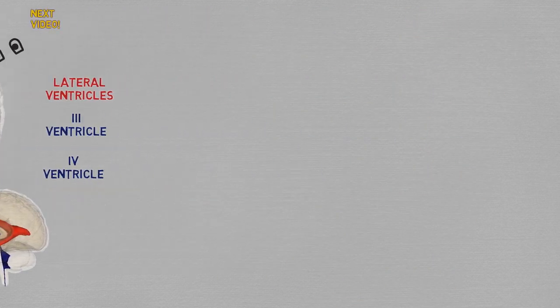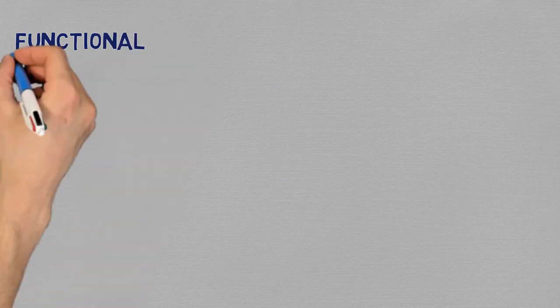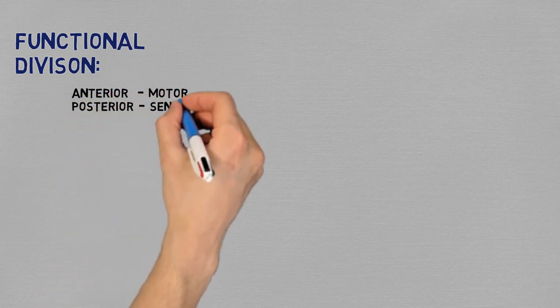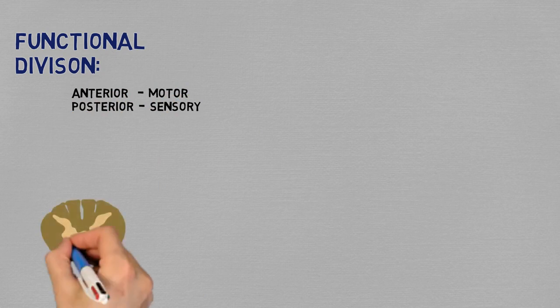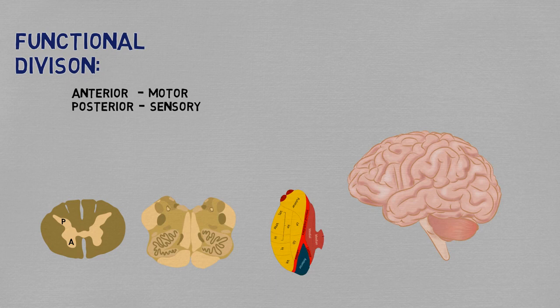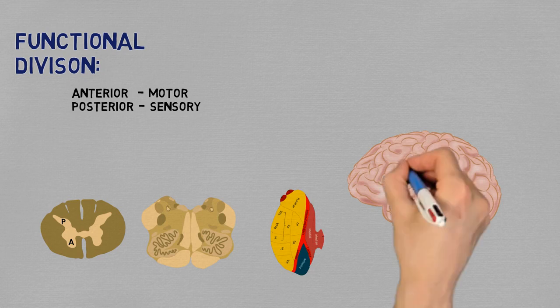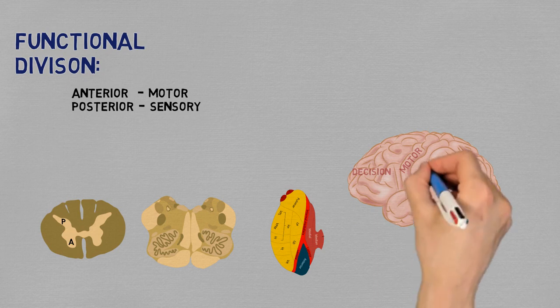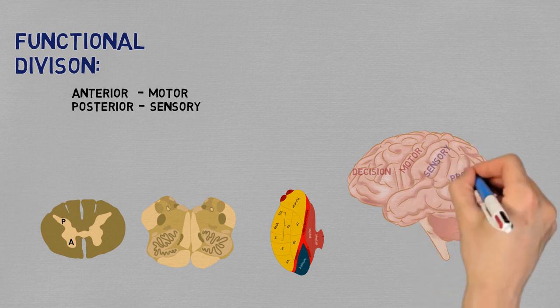Another interesting thing to mention is that there is a functional division between the anterior and the posterior parts of the central nervous system. The anterior part is associated with motor activity, and the posterior part with sensory activity. This is true not only in the spinal cord, with the anterior and posterior columns of neurons with these respective functions, but also in the brainstem nuclei, the thalamus, and even in the cerebral hemispheres. The frontal lobe is associated with motor activity and decision-making, whereas the parietal and occipital lobes are associated with sensory reception, information processing, and vision.